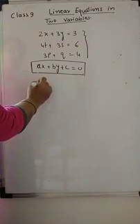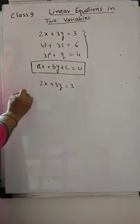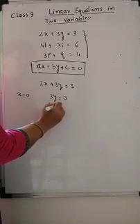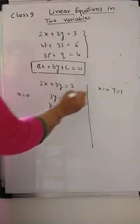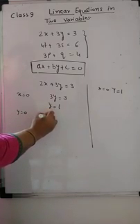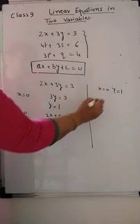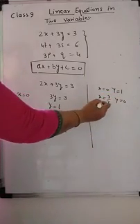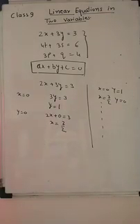Suppose we take 2x plus 3y is equal to 3. If we put x is equal to 0, then 3y is equal to 3, so y is equal to 1. One solution is x equals 0 and y equals 1. Second, if we put y is equal to 0, then 2x is equal to 3, so x is equal to 3 by 2. Another solution is x equals 3/2 and y equals 0. You can get infinitely many solutions like this.